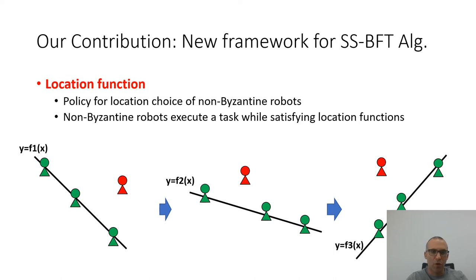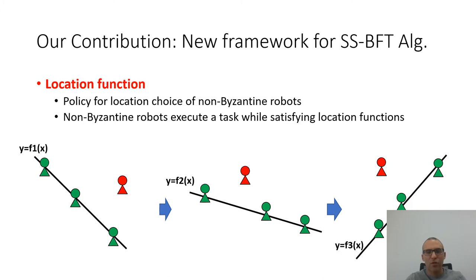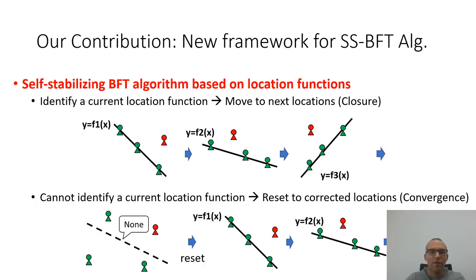Our policy is based on choosing the degree of the polynomial or the required number of points for defining a shape structure function very carefully, in order to be small enough in relation to the number of robots, so that the Byzantine robot minority that does not obey the polynomial or shape can be identified and discarded. We assume that all robots move at once, or there is a synchronous clock that allows enough smaller granularity steps to reach the position in the next polynomial or function, prior to re-examining the next location. Our contribution is that we develop a new location policy where the non-Byzantine robots execute a task while satisfying different location functions.